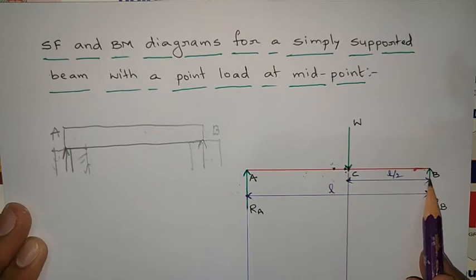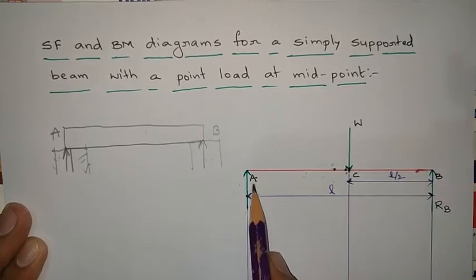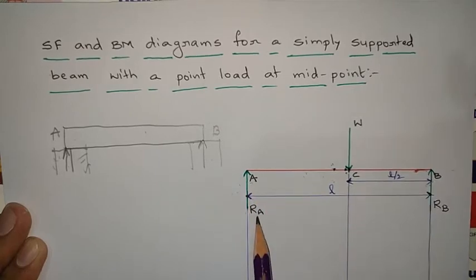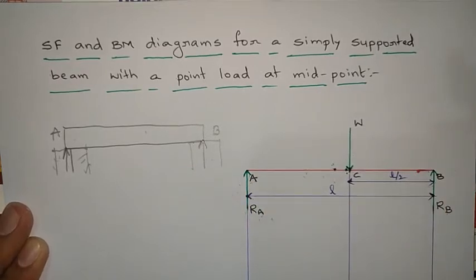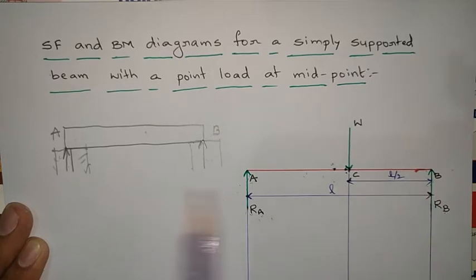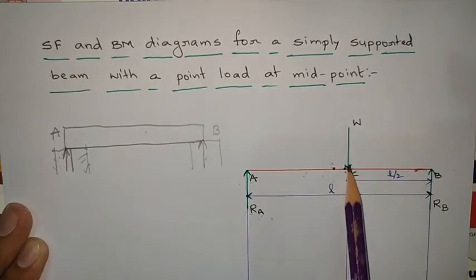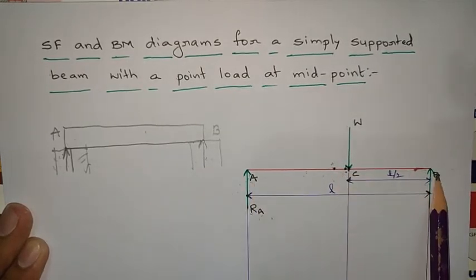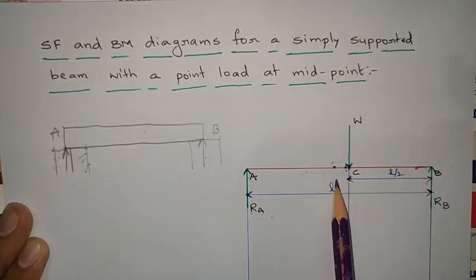The green color represents the support reactions acting at the two supports A and B, as they are lying on the simple supports. A load W is acting at the center of the beam A-B, which is at a distance of L/2 from point B.